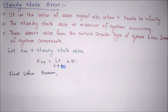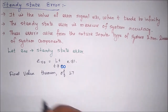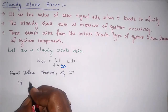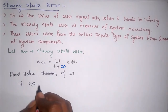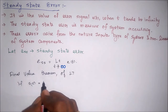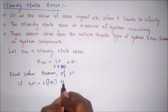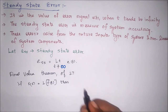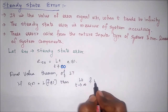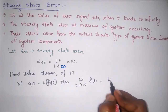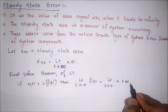We know the final value theorem of Laplace transform. If F(s) equals the Laplace transform of f(t), then the final value theorem states: limit as t tends to infinity of f(t) equals limit as s tends to zero of s into F(s).